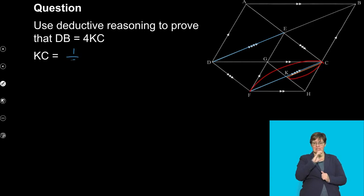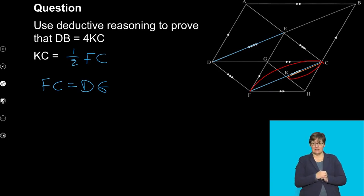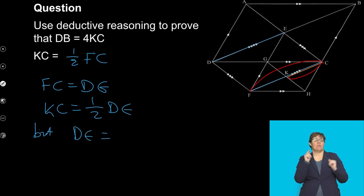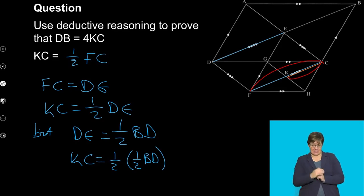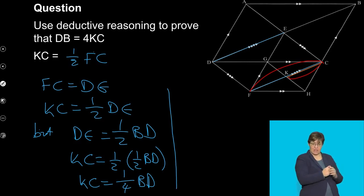So KC is half of FC. But also, I know that FC is equal to DE. So therefore, it means KC is equal to half of DE. But I know also that DE is equal to half of BD because it is a diagonal. So as a result, that will therefore mean that KC is equal to 1 over 2 into 1 over 2 BD. And then if I multiply them, I will get KC is equal to 1 over 4 BD. And then if I want to simplify this further in order to write it the way they want it, I will then have BD is equal to 4 KC.